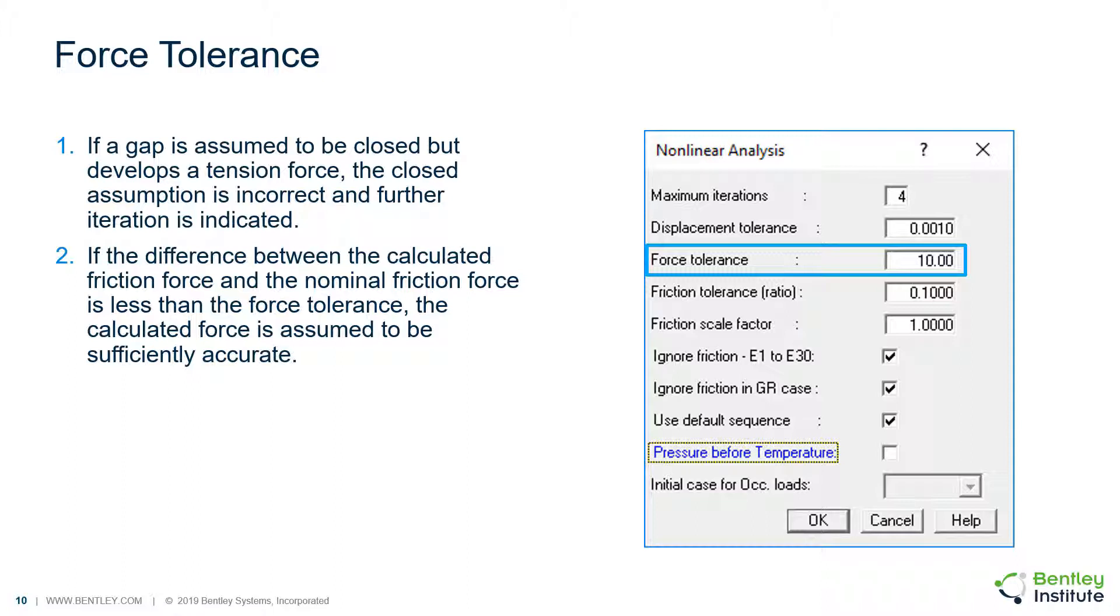If friction is present, the nominal friction force is the bearing force multiplied by the friction coefficient. During the iterative solution, the calculated friction force will not equal the nominal force exactly. If the difference is less than the force tolerance, the calculated force is assumed to be sufficiently accurate. If the force does not exceed the value at any support, the analysis is assumed to have converged.